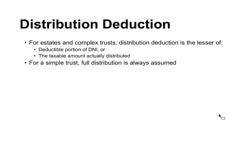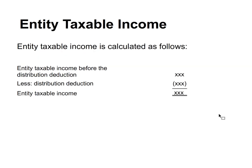For estates and complex trusts, the distribution deduction is the lesser of the deductible portion of DNI or the taxable amount actually distributed. For a simple trust, the full distribution is always assumed — it's essentially pro rata. The entity's taxable income equals the entity's taxable income before the distribution deduction minus the distribution deduction. For a simple trust, this will be zero because the distribution deduction equals the full amount and flows through to all the respective parties.